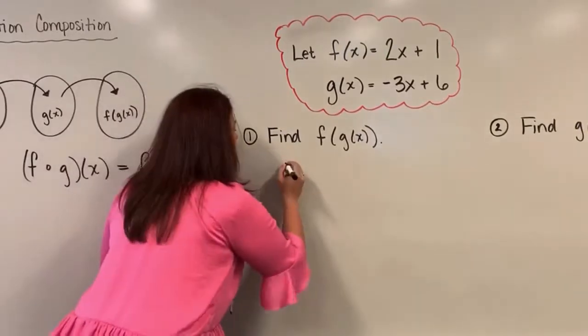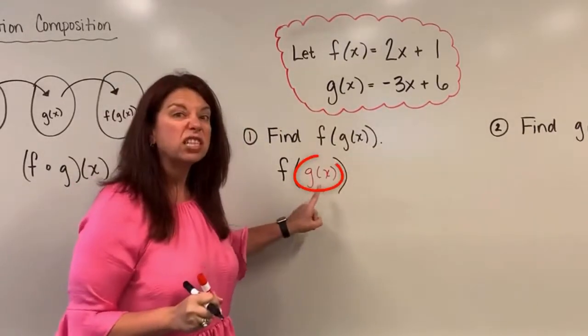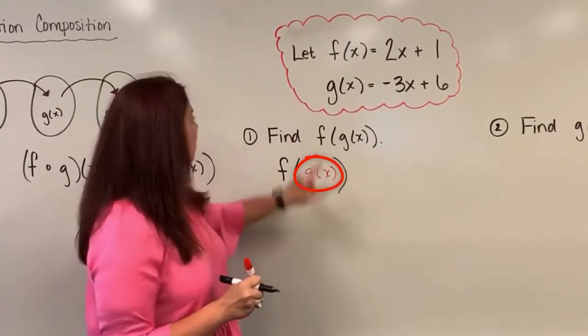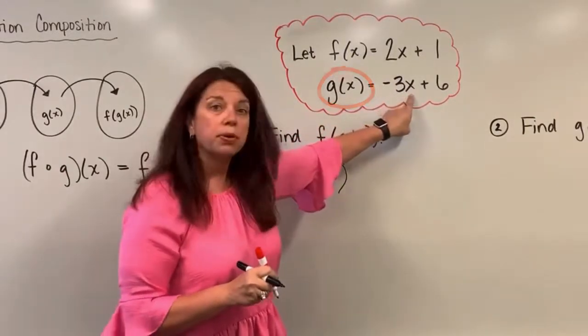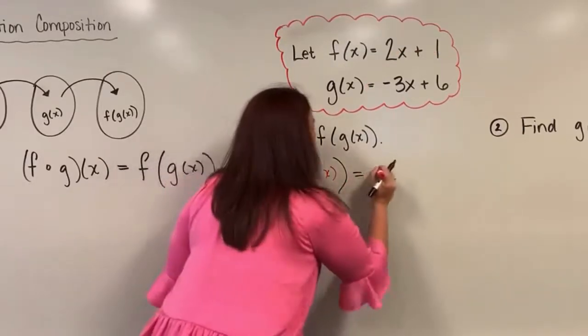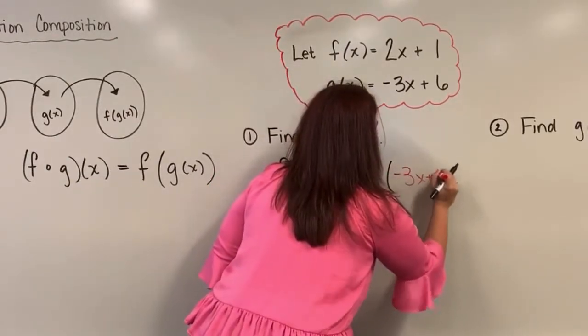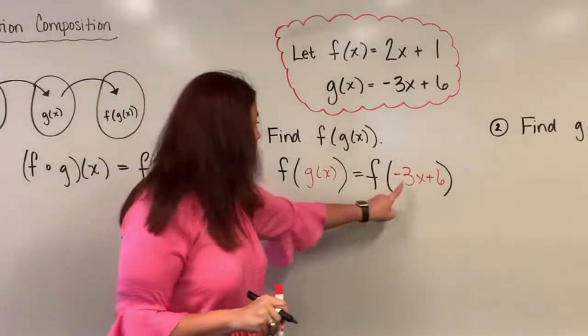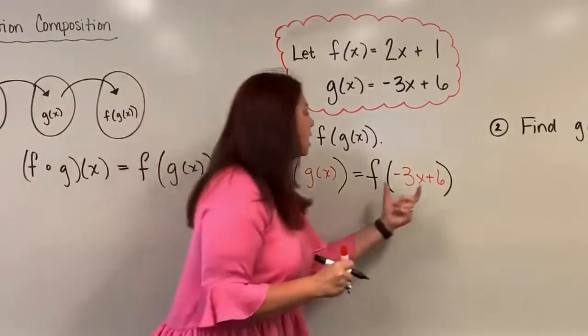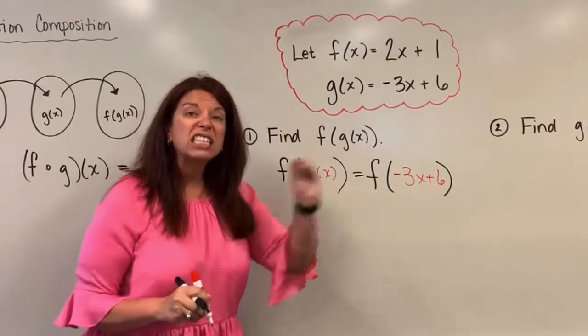So this says we're going to start with f of g of x. And I'm writing this in a different color so you can actually see this g of x is a whole other function that I'm going to steal from my example here. So instead of writing g of x, since I know what g of x equals, let's input this function right in, negative 3x plus 6. So now we have that this is equal to f of, instead of g of x, we have negative 3x plus 6.